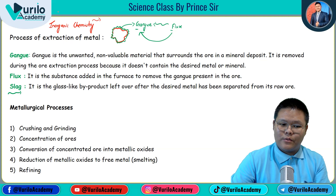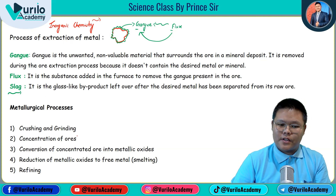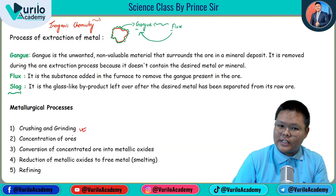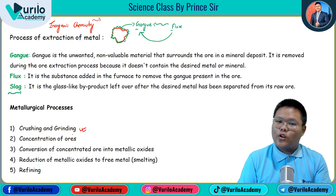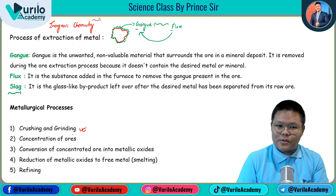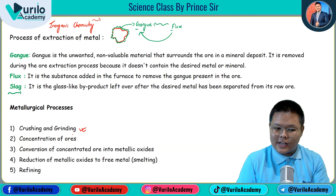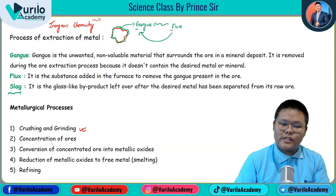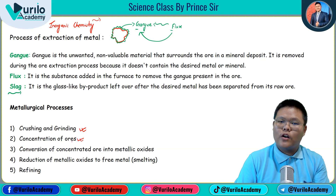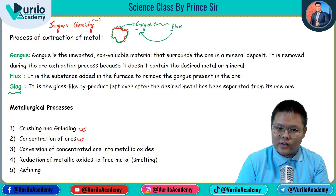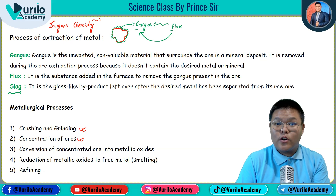The metallurgical process involves: the first process of crushing and grinding, and the second process of concentration — which is used to concentrate the ore.